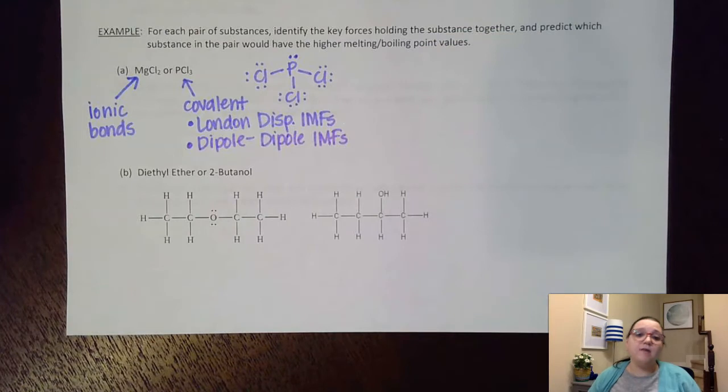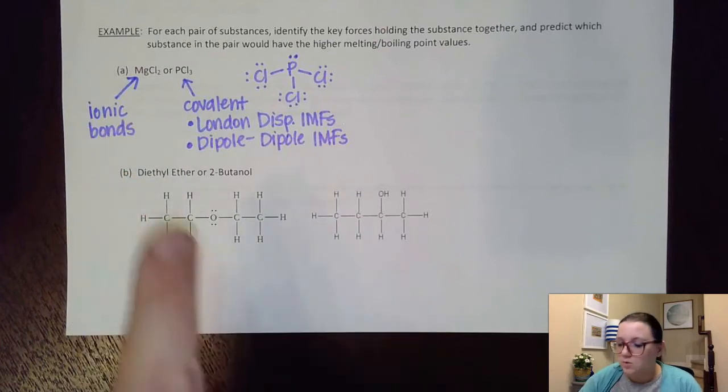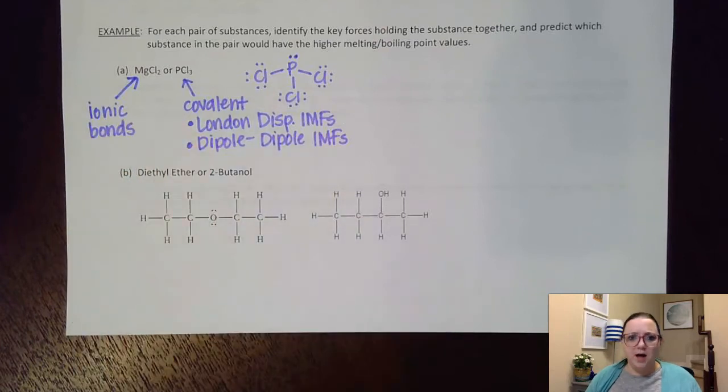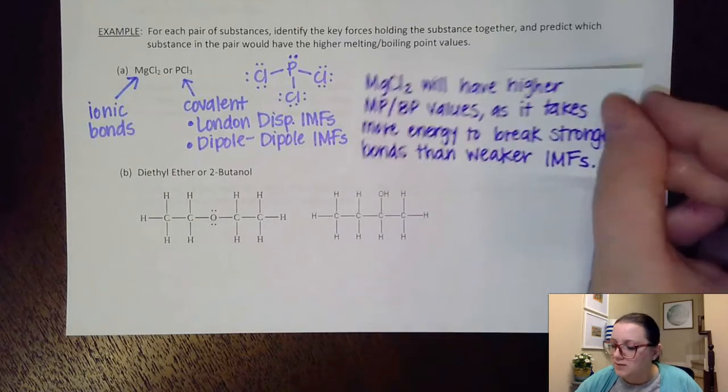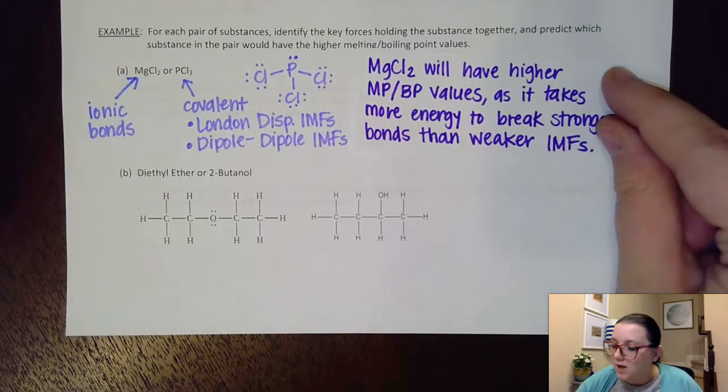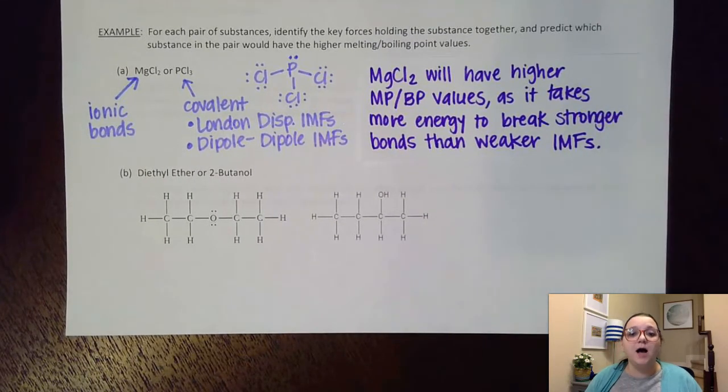However, I would not have hydrogen bonding because I don't even have hydrogen in that substance. So if I want to identify which substance in the pair would have higher melting or boiling point values, keep in mind that with MgCl2, I'm trying to break bonds, whereas PCl3, I'm just trying to break IMFs. MgCl2 would have higher melting point, boiling point values, as it takes more energy to break those stronger bonds than it takes to break weaker intermolecular forces.